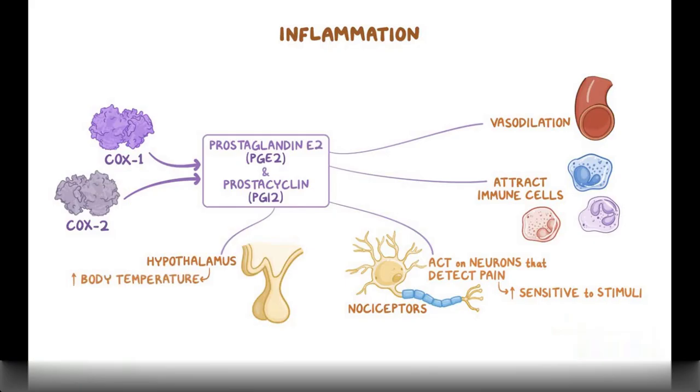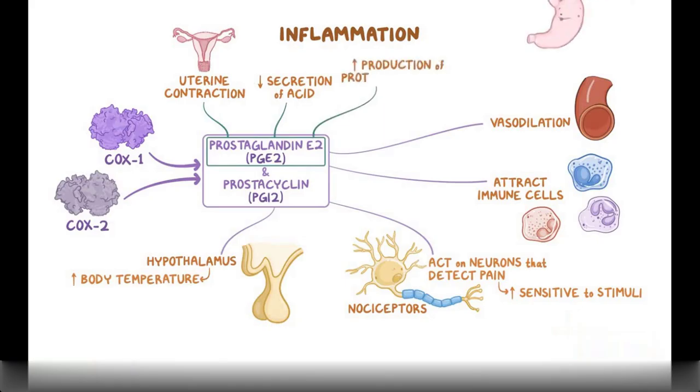Prostaglandin E2 also has other effects, like causing uterine contractions, decreasing the secretion of acid, and increasing the production of protective mucus in the stomach.